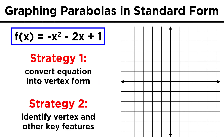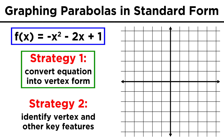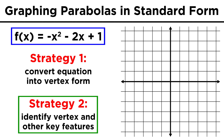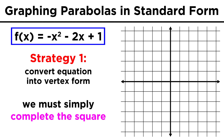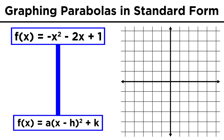Instead, we can do one of two things. We can either rearrange the equation to get it into vertex form, or we can follow a series of steps that will allow us to figure out where the vertex is and other information that will allow us to graph the function. Let's try the first way first. Remember when we learned how to complete the square? That's exactly what we are going to do here, so that we can get this parabola in vertex form, because once in vertex form, we can just identify all the transformations we need to apply to a simple x squared curve to get this particular parabola.